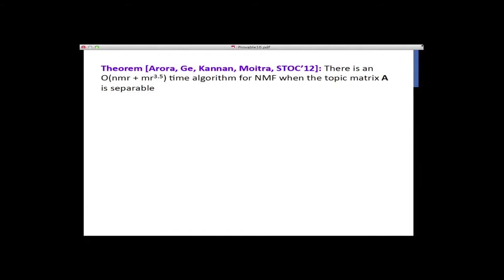The main result for the first part of this talk: when the topic matrix is separable, with R being a large but constant number of topics, there is a quadratic-time algorithm for solving NMF. This is far better than N times M to the R-squared or other fixed-parameter tractable results. Finding the right assumptions can really change whether theorists need to be pessimistic about these problems.